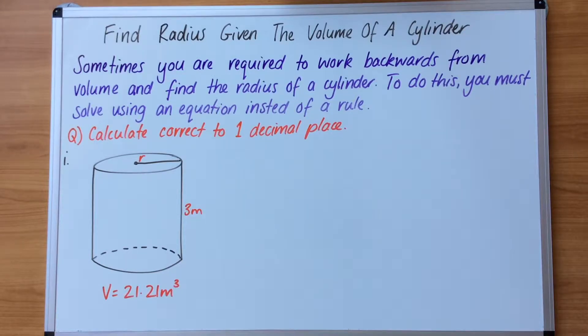So I've got a question here. It says calculate correct to one decimal place. We've got our diagram, we've been given the volume and the height. So this is the volume, this is the height. So V, height, and the radius is our unknown.